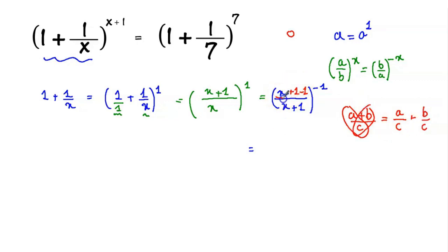But A plus B over C is equal to A over C plus B over C. So here we can write it as x plus 1 over x plus 1, minus 1 over x plus 1, all to the power minus 1.